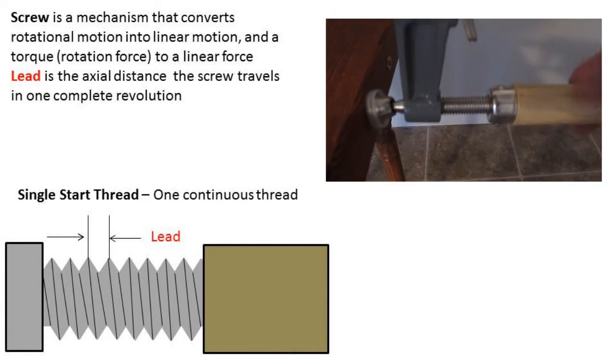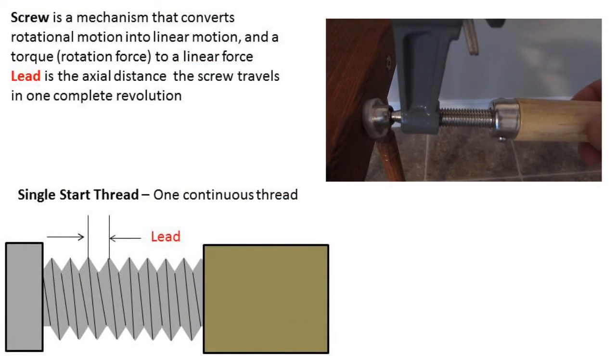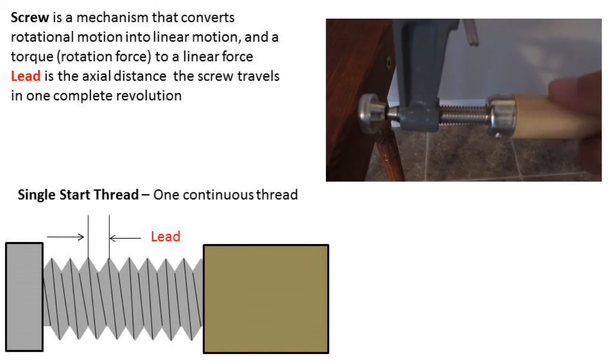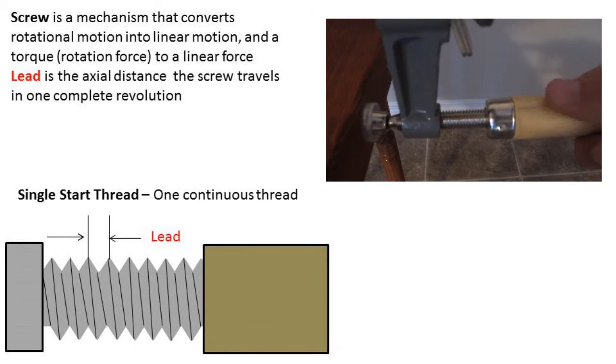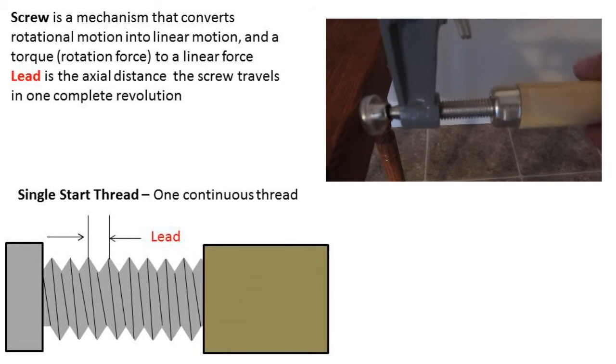What is a screw? A screw is an inclined plane that is wrapped around a cylinder. It is a mechanism that converts rotational motion into linear motion and a torque or rotational force into linear force.